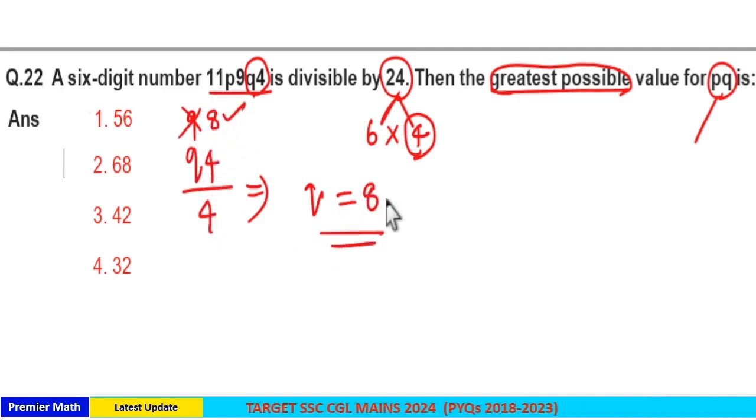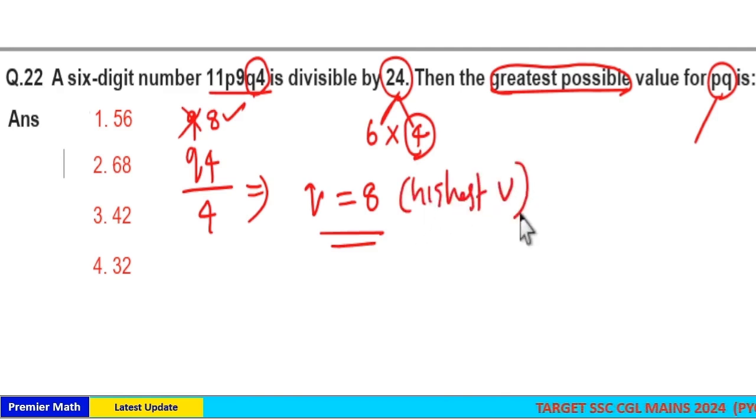Which means here highest possible value for Q is 8. Which means if you take the highest multiple of 8 from the options.